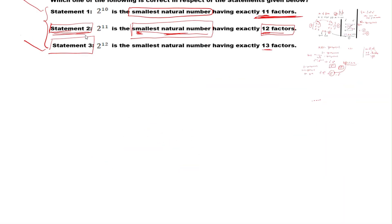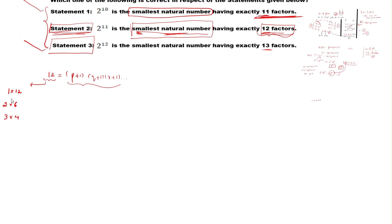Now let us solve statement 2. They have given the number has exactly 12 factors, which means 12 equals (P+1)(Q+1)(R+1) — there may be more terms, we don't know. We have to break 12 into multiplication forms. The different cases are: 1×12, 2×6, 3×4, 1×2×6, 2×2×3, and 3×2×2. So 12 can be written in 6 different case forms.